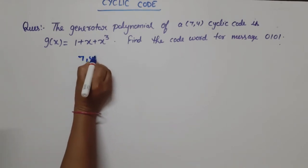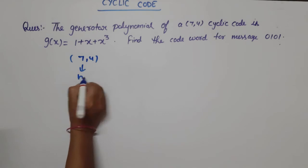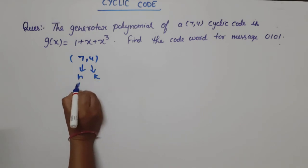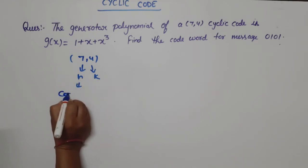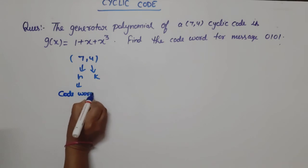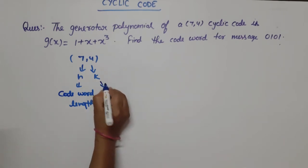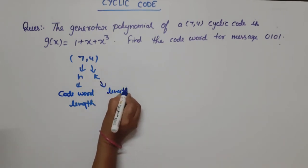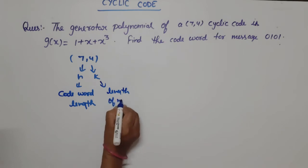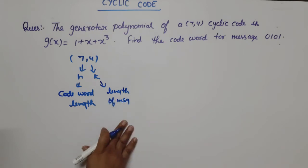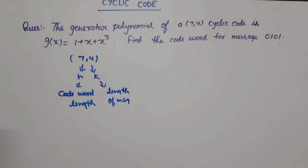When it is mentioned (7,4), this is n and this is k. n is the codeword length, meaning our codeword generated will be 7 bits, and k is the length of the message, meaning our message will be 4 bits. The message given in the question is 0, 1, 0, 1 — which is indeed 4 bits.